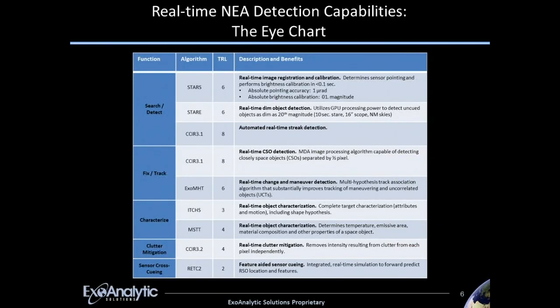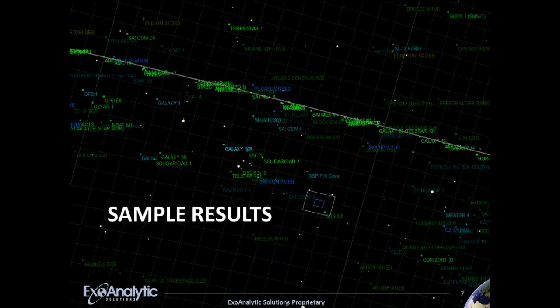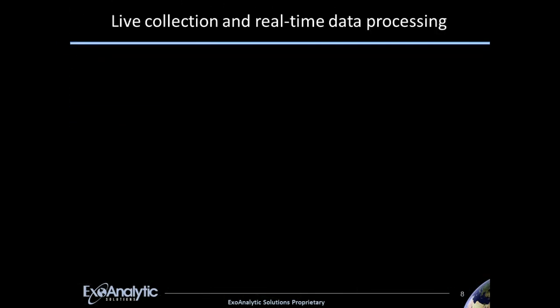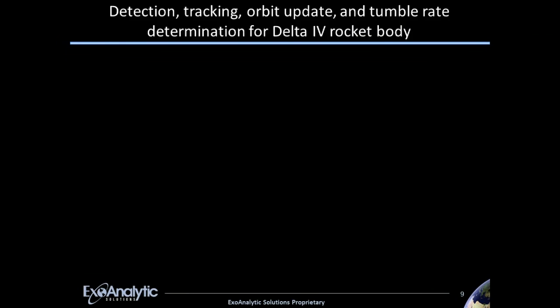Every good astronomer presentation needs an eye chart — this is mine. It has more detailed descriptions of the key algorithms and performance statistics. What I really wanted to show you was some key results. I had a video with a wide field of view on the previous slide where we tracked 14 objects simultaneously in a 30-second clip.